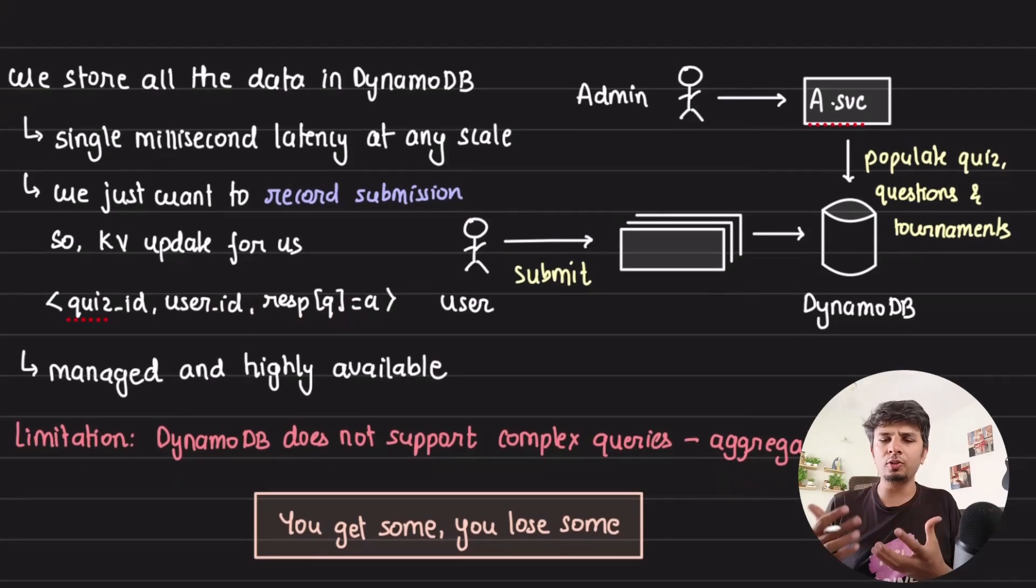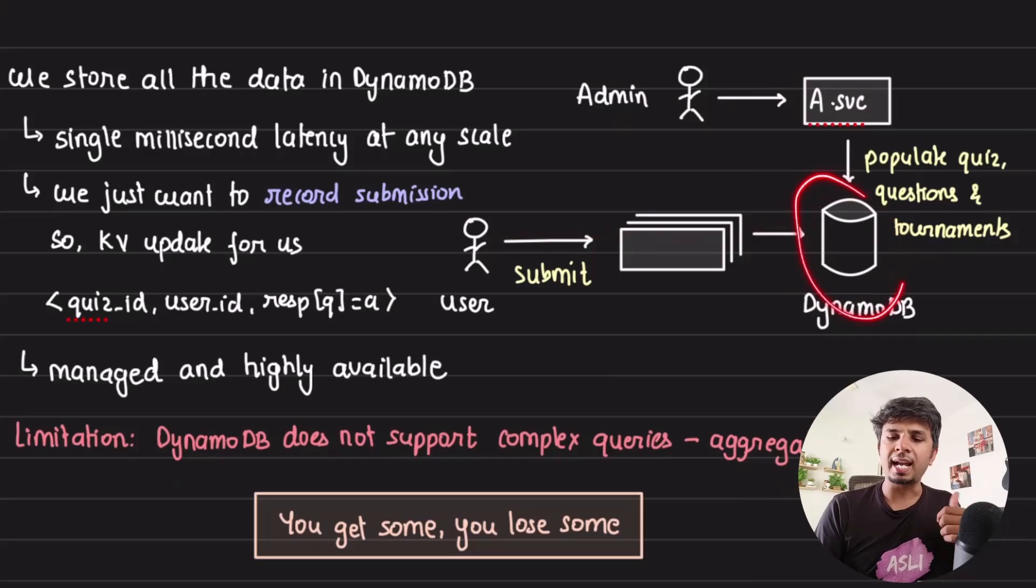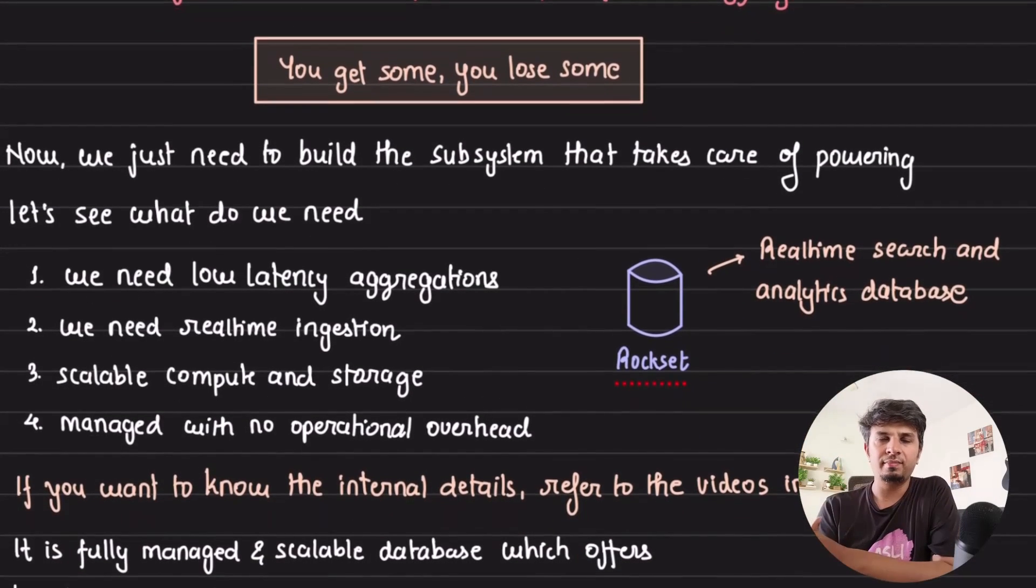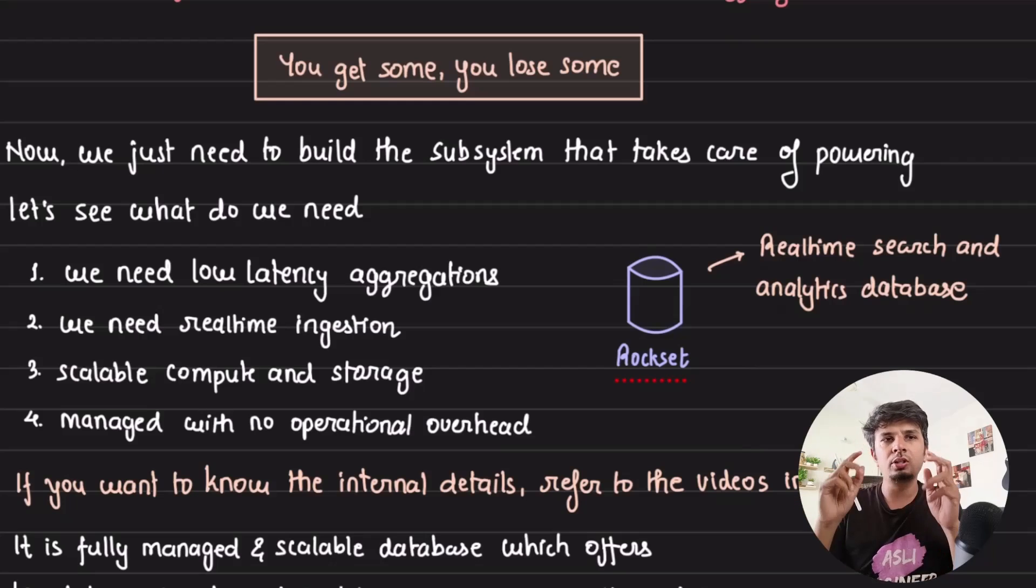Our flow would be you would have an admin which builds through an admin service, creates the quizzes, questions, and tournament, and makes those entries in DynamoDB. Whenever user is interacting with it, it's storing it in DynamoDB. DynamoDB being managed offers high availability, snapshots, archival—everything. The best part is single digit millisecond latency. What it's not good at is aggregation or complex queries. Which is where we need another system that is highly optimized for aggregation with almost zero latency ingestion and almost real time, meaning data which is ingested is immediately available for query.